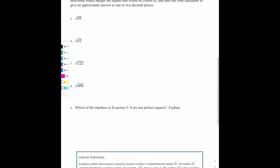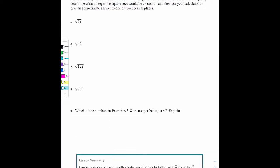So now what I would like you to do is try exercises 5 through 9. However, we will do number 6 together as a model. So let's model number 6, and then I will give you time to try your exercises. The question 5 through 9 is for you to determine the positive square root of the number given. If the number is not a perfect square, I want you to determine which integer the square root would be closest to. And then use your calculator to give an approximate answer to one or two decimal places. So I will show you the difference between those two with number 6.